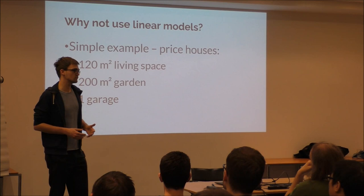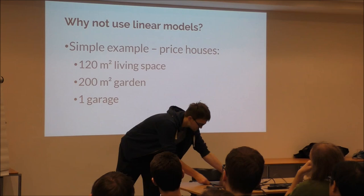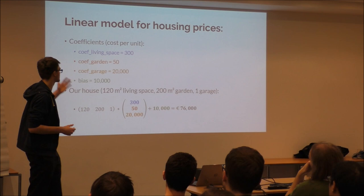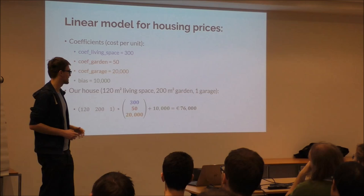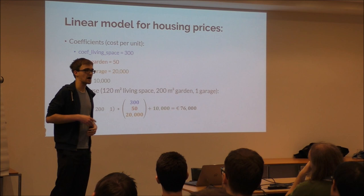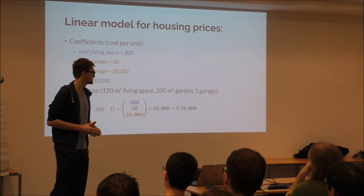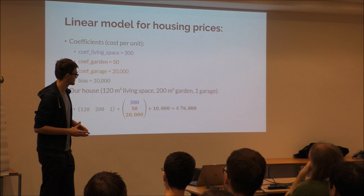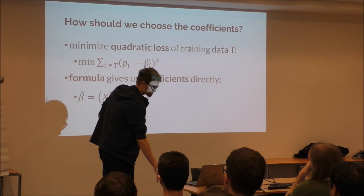Let's say you have a house and you want to predict its price. Your house is 120 square meters of living space, 200 square meters of garden, and one garage. The simple linear model would have coefficients — basically unit prices — for each of the three inputs: the living space, the garden size, and how many garages the house has. You multiply all your input values with their respective coefficients and add a bias term, which is something like a base price. Basically it's just a weighted sum of the inputs plus some constant.